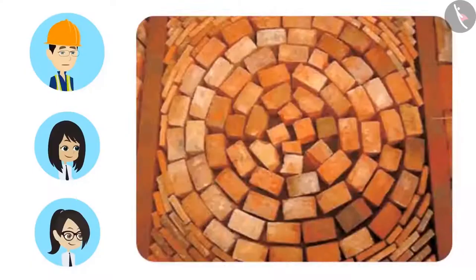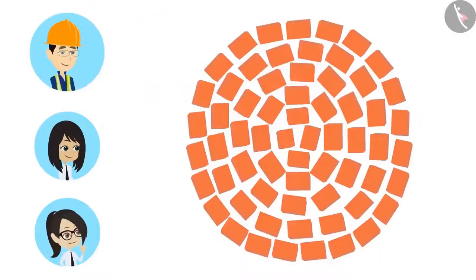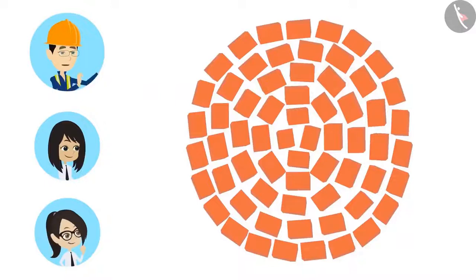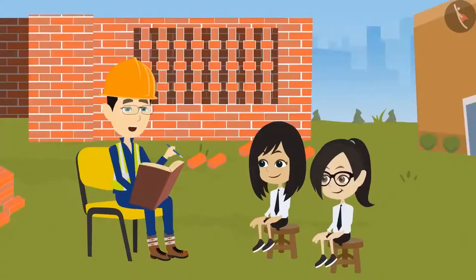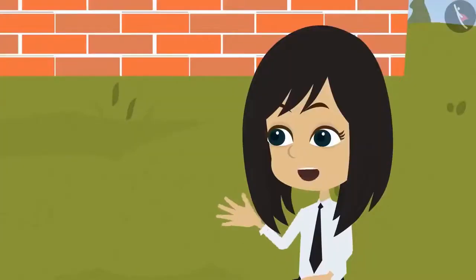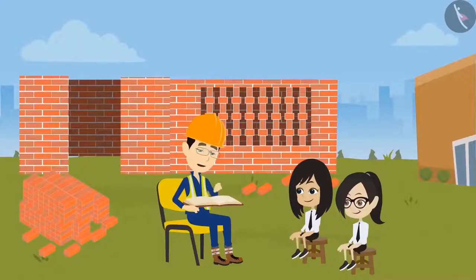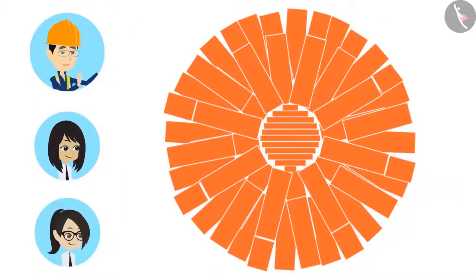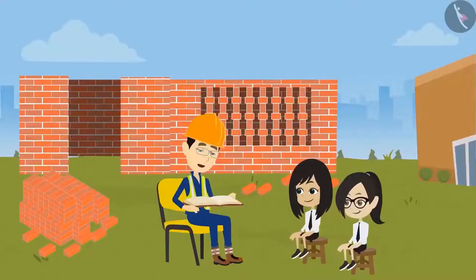Now look at this design. Sir, this design is a circular shape — is it made with vertical bricks? Yes, this is made with vertical bricks. You too can try making such a design at home. Sure, sir. Now I will show you another circular design made of bricks. See this. Sir, this design is very beautiful.